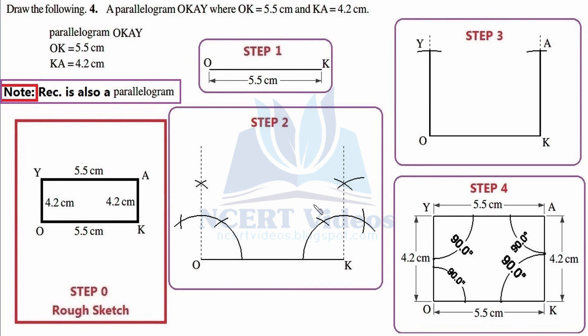With this, we have constructed all the exercises of the chapter Practical Geometry for standard 8th. We observe that the bisection method helps to construct angles, and it is acceptable to use a protractor for complex angle measurements. With this, exercise 4.5 has been solved.